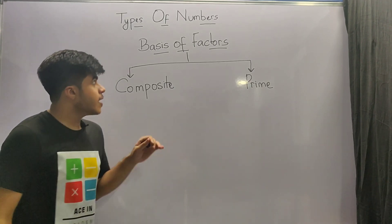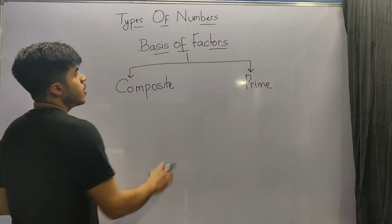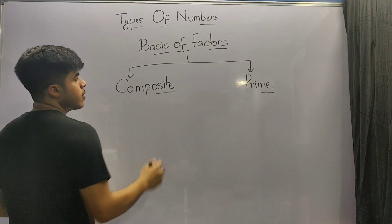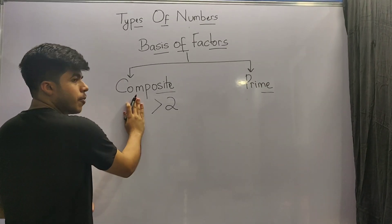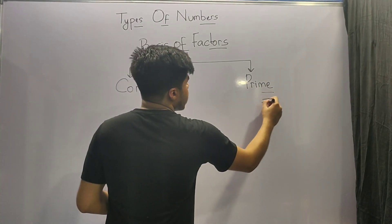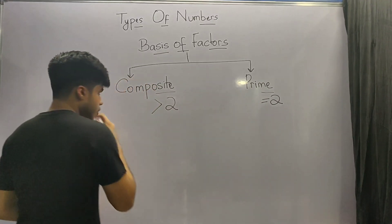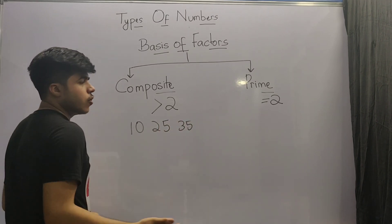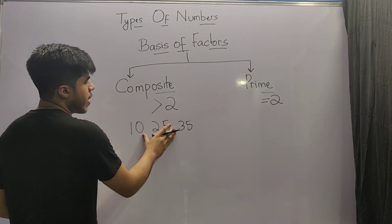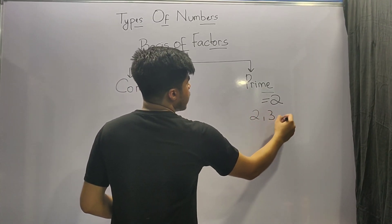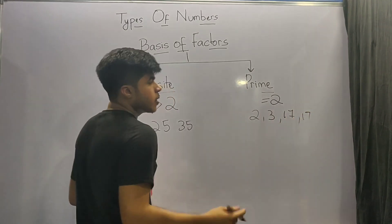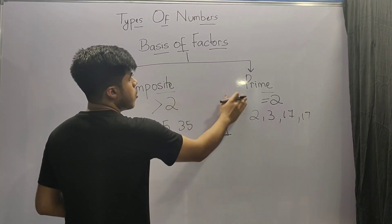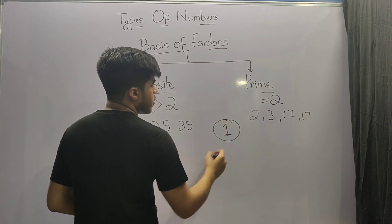Our last classification is on the basis of factors, where we have composite and prime numbers. If a number has greater than 2 factors, the number is called a composite number. Examples of composite numbers are 10, 25, 35, and so on, because all these numbers have more than 2 factors. Examples of prime numbers are 2, 3, 17, 19, and so on, because all these numbers have only 2 factors. Note that the number 1 is neither a composite number nor a prime number — it is considered a unique number.